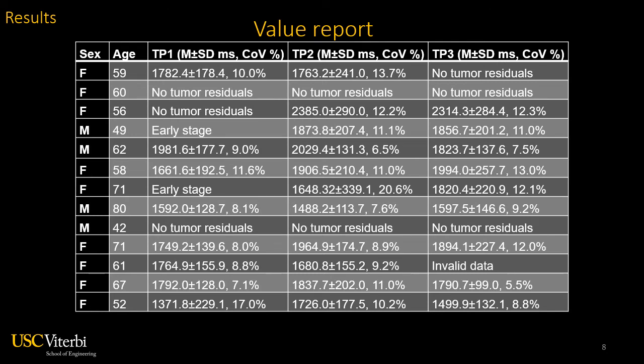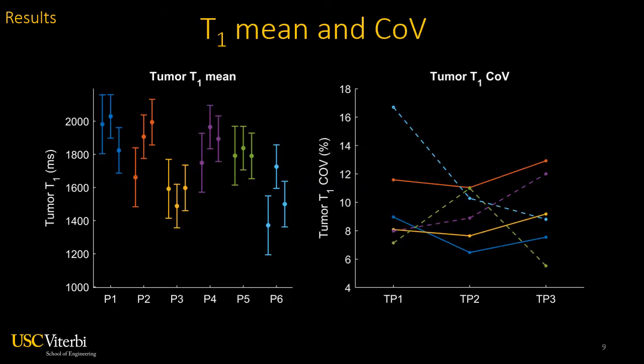Patient demographics and T1 values from all three time points are reported. Both brain tumor T1 values and the coefficient of variation are reported to be larger than those measured in reference datasets and literature values at 3 Tesla. Tumor T1 mean and coefficient of variation are graphically reported. There is no statistically significant trend at different time points, but interestingly, as the figures show, there are more variations among patients than those between time points.